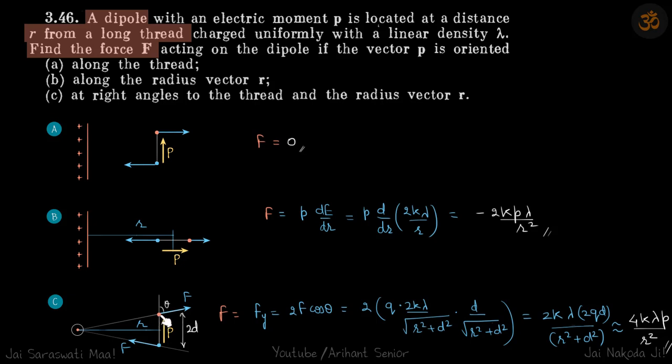Cos theta is again d divided by the square root of r² plus d². When you simplify, you get this. Here, because r is much greater than d, this can be written as r², and our answer will be 4k lambda p/r².